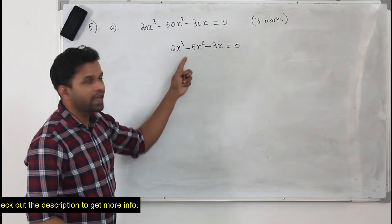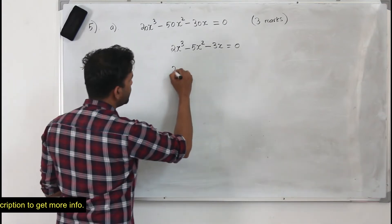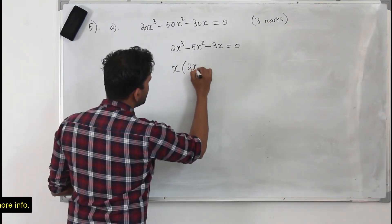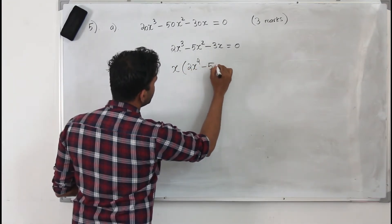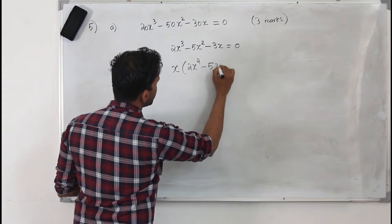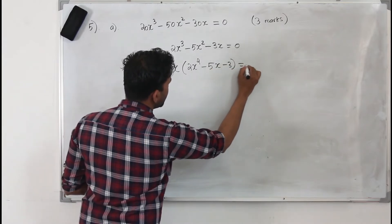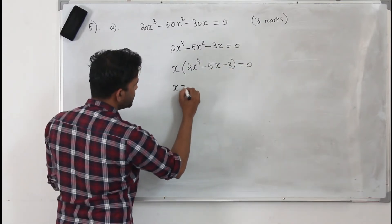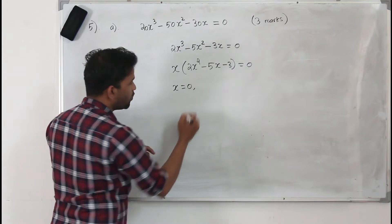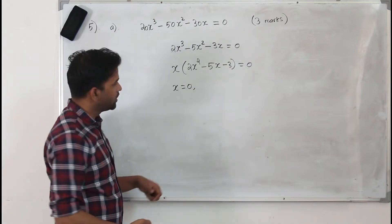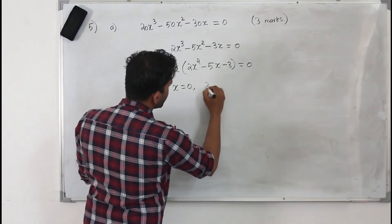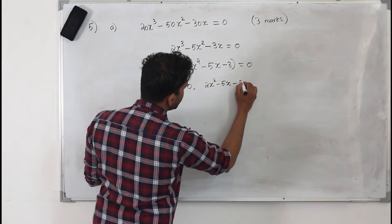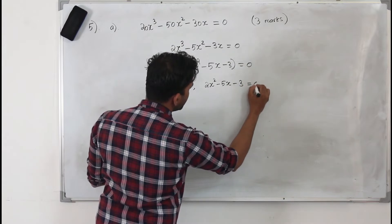Now you take x as a common factor out, so you will be left with x times (2x squared minus 5x minus 3) equals 0. So equate them separately to 0: x is 0 — that's our one solution — and 2x squared minus 5x minus 3 equals 0.